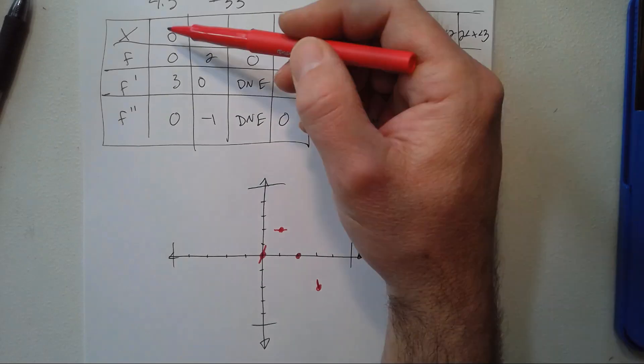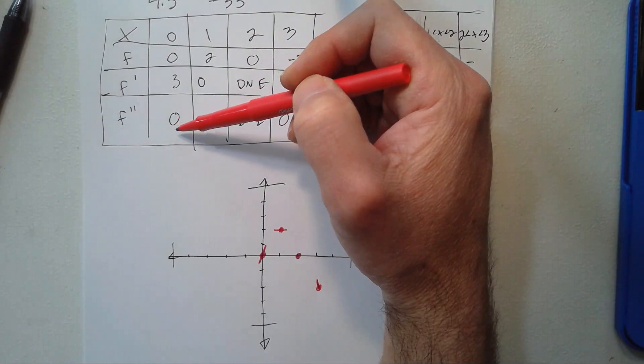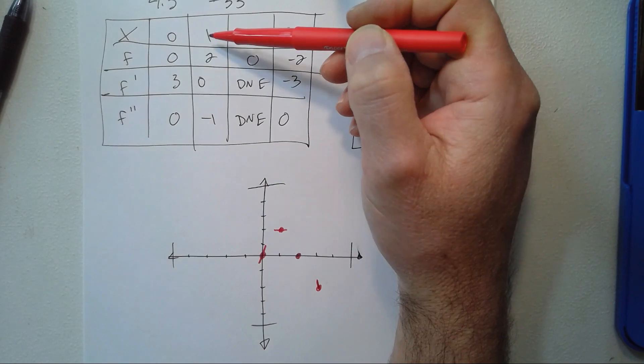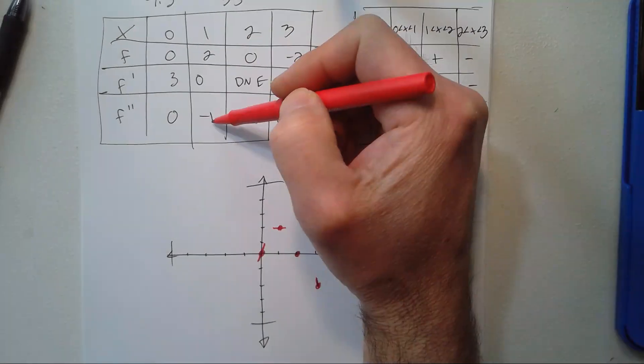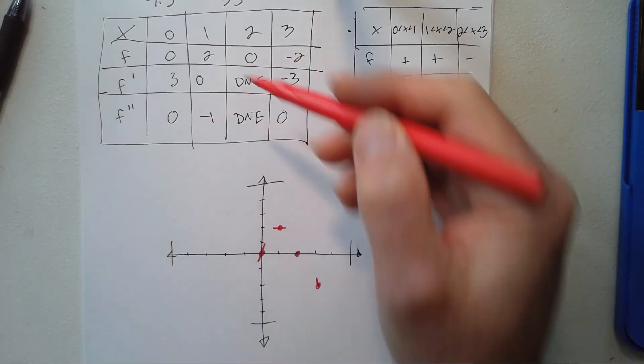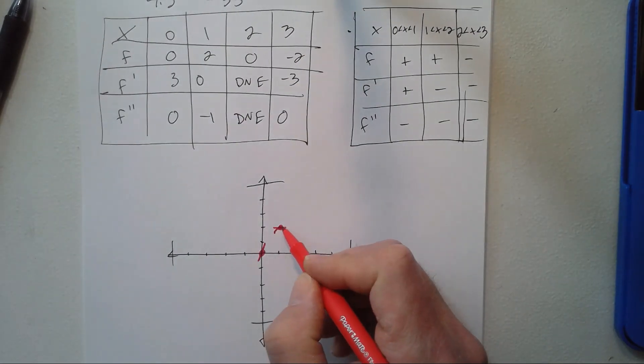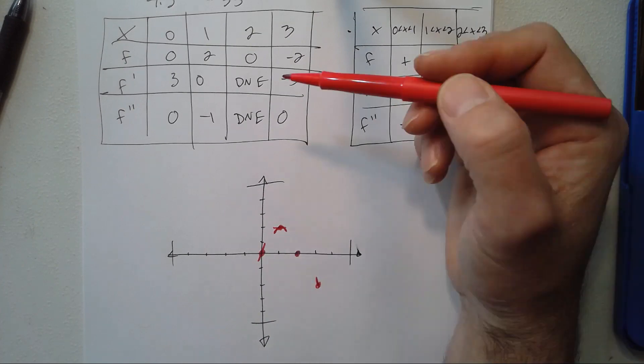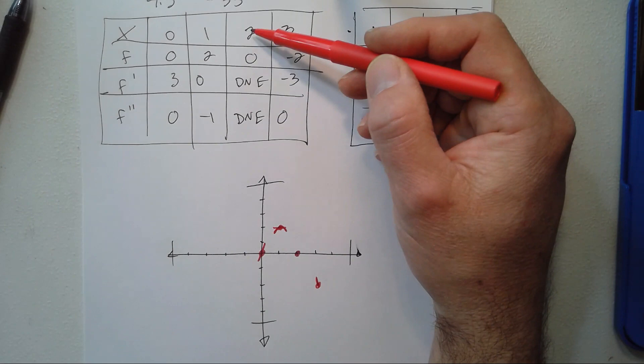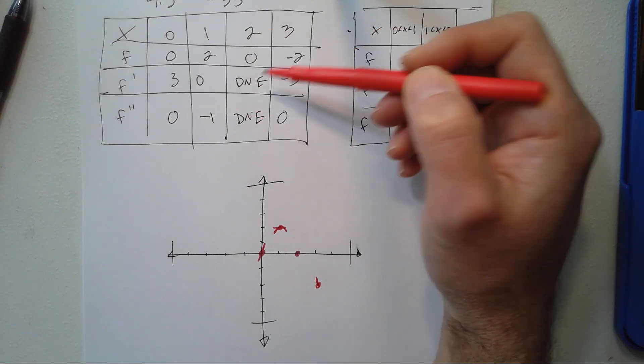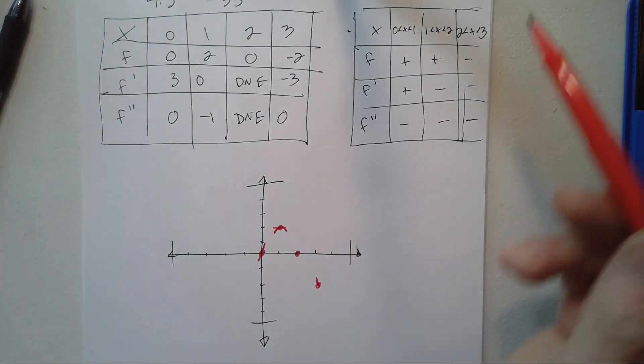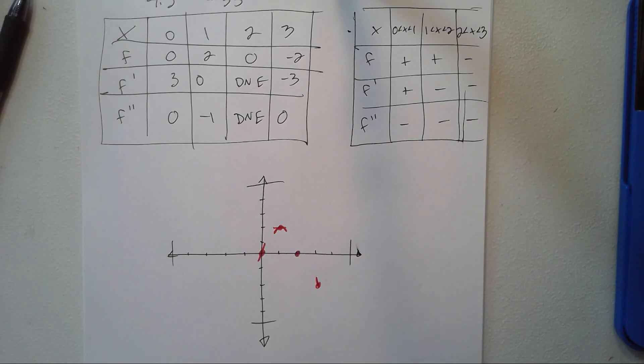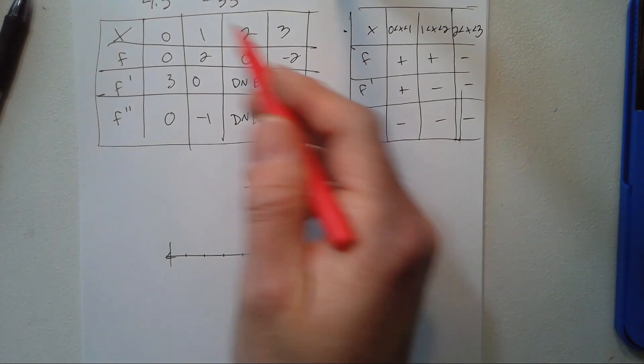Now when x is 0, the second derivative is 0, so there's no concavity at 0. When x is 1, the second derivative is negative 1, so that means it's concave down at 1. If it's flat and concave down, we know it's going to have a maximum like that. At 2, the second derivative doesn't exist, which makes sense—the first derivative doesn't exist. At 3, the second derivative is 0. We don't know anything about the graph beyond 3, so 0 and 3 are the starting and ending points of the function.